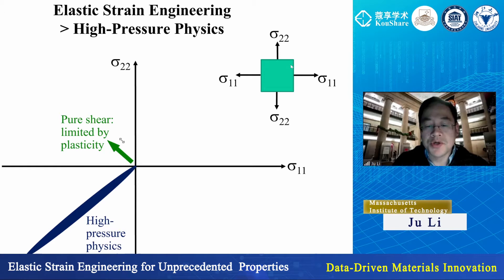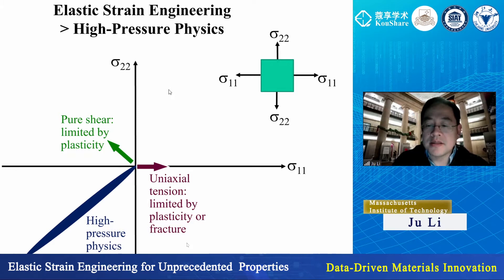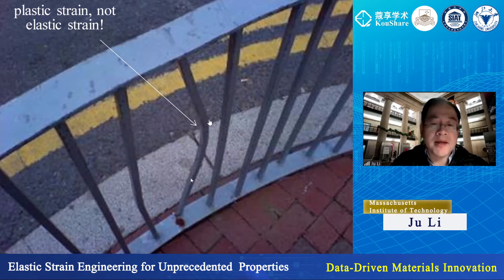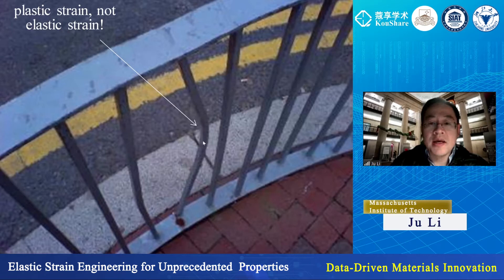So you'll be pretty far away from the ideal strength, which was predicted by Frenkel to be about 10% elastic strain. Just to remind everyone, you can take a piece of conventional material and bend it 20, 30, 40%, but basically all of that is plasticity — there is usually less than 0.1% elastic strain in conventional materials.